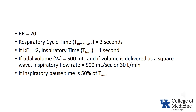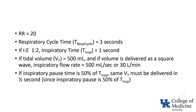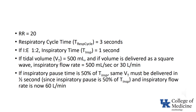Now assume that the ventilator settings are changed such that an inspiratory pause equal to 50% of the inspiratory time is added. That means the same tidal volume must be delivered in one-half second. As a consequence, the inspiratory flow rate is now 60 liters per minute. Obviously, one consequence is that the peak inspiratory pressure is likely to increase. If pressure-limited ventilation is being used, the more rapid inspiratory flow rate will likely result in a decreased tidal volume.